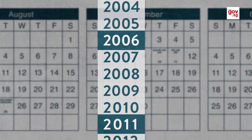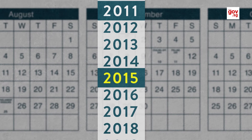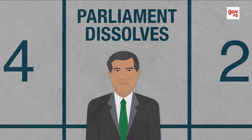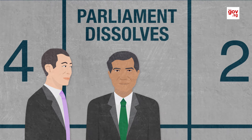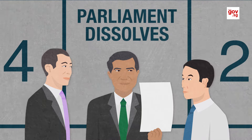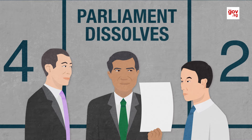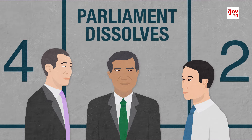The General Election is held approximately once every five years. The President, when advised by the Prime Minister, will call for elections by dissolving Parliament. He will then issue a Writ of Election to the Returning Officer, or RO, who is the officer overall in charge of elections in Singapore.